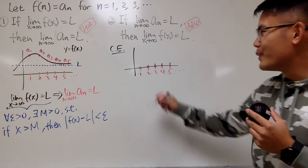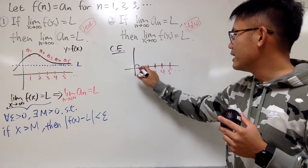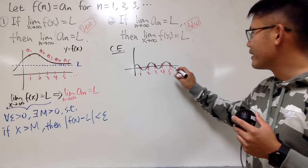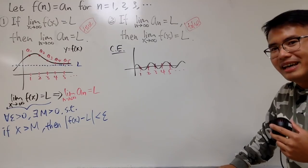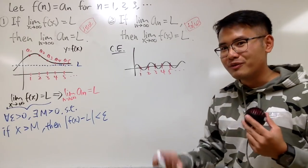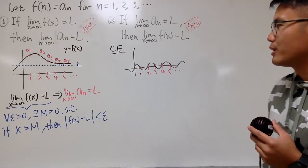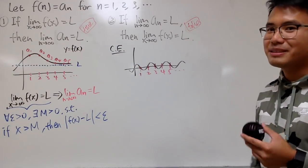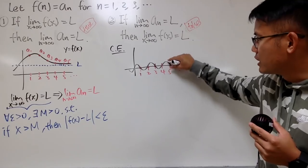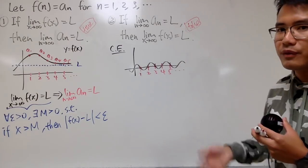So what can we do? As long as I go from here and then up, hit this point, then go down, up again, hit this point, and so on — I can just have the function keep going up and down, up and down. To come up with a legitimate function, we can just use a sine curve. As long as you keep the same amplitude and don't make it smaller and smaller, you are good — because the sine wave does not converge to a limit.